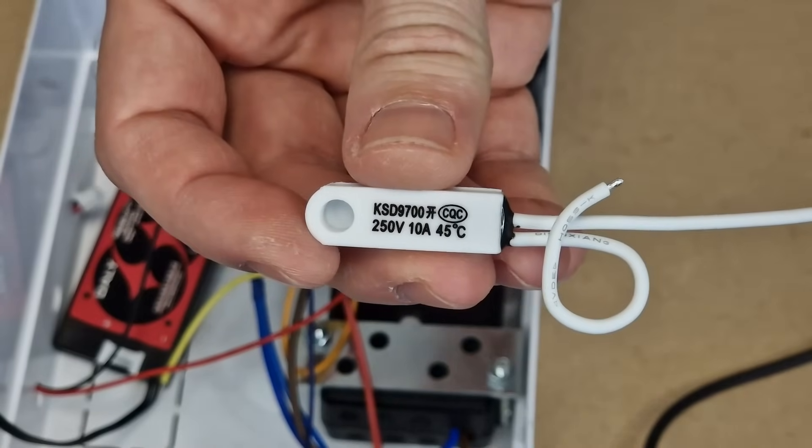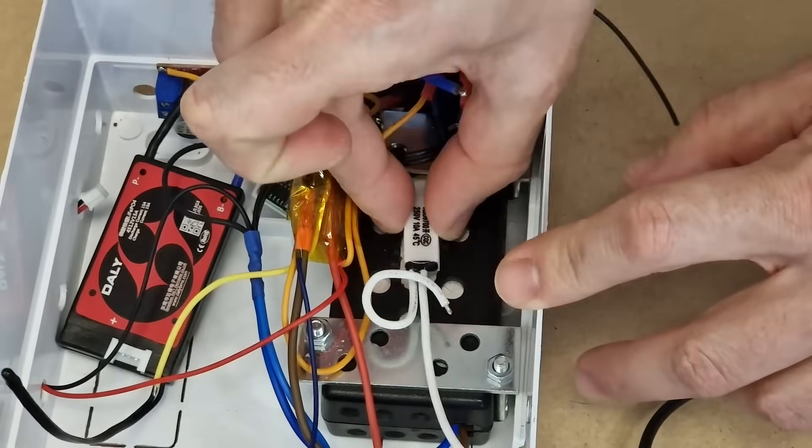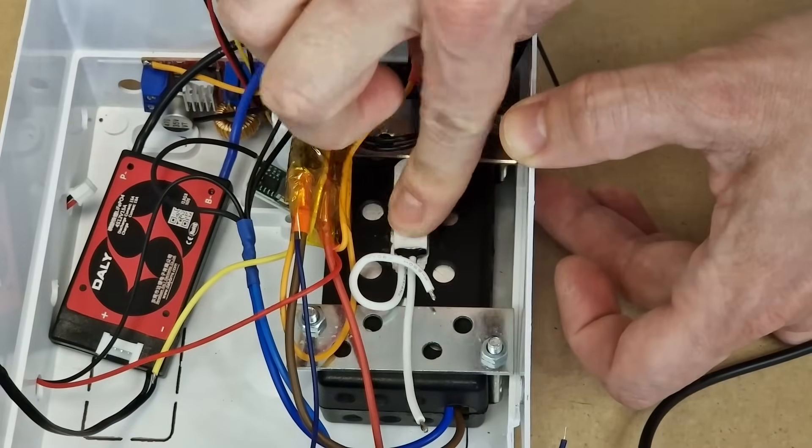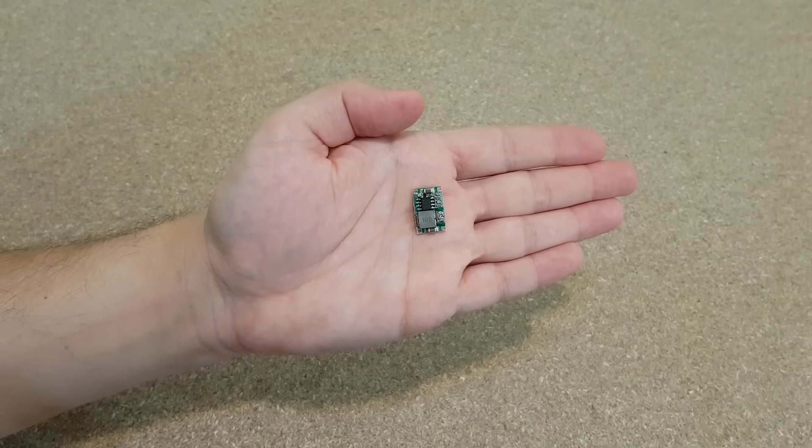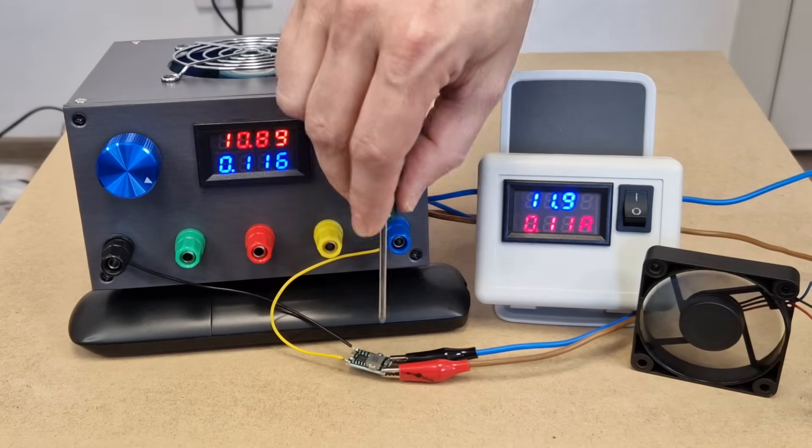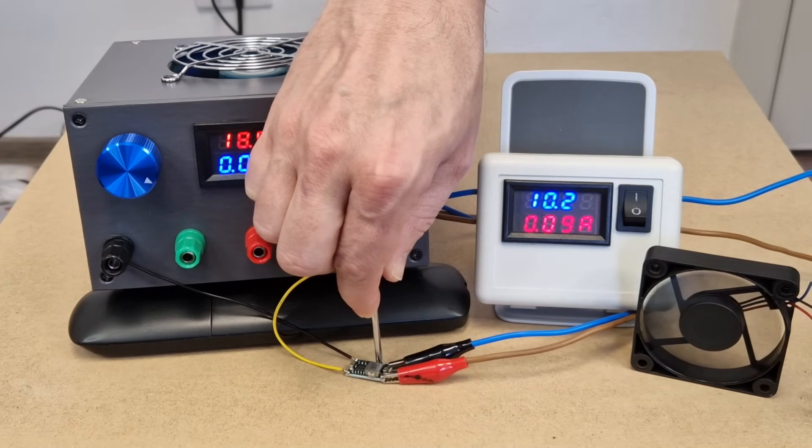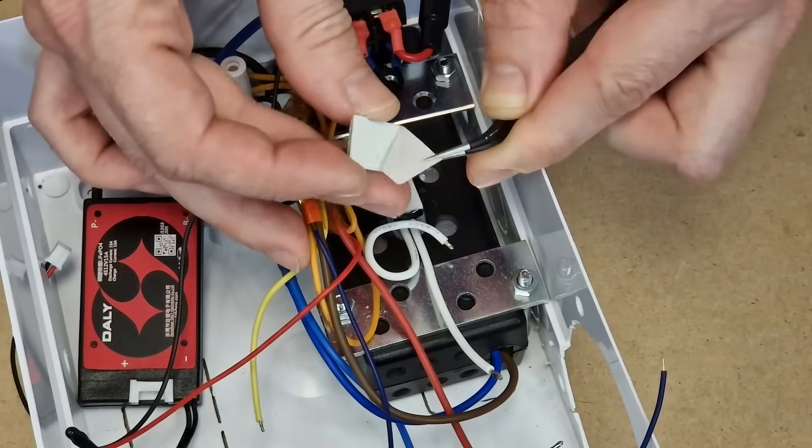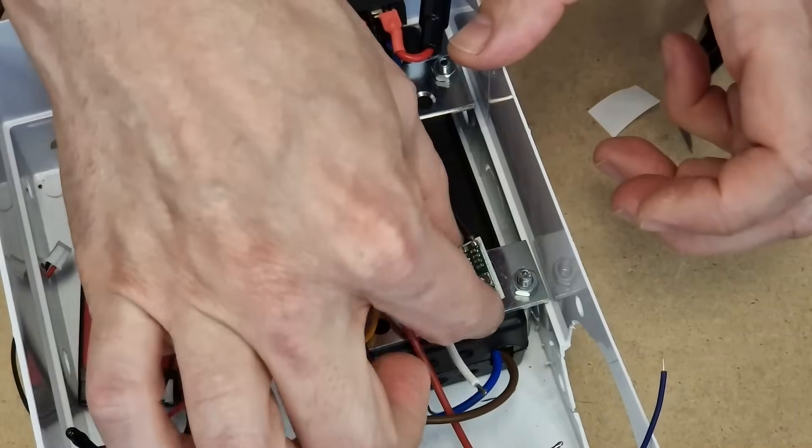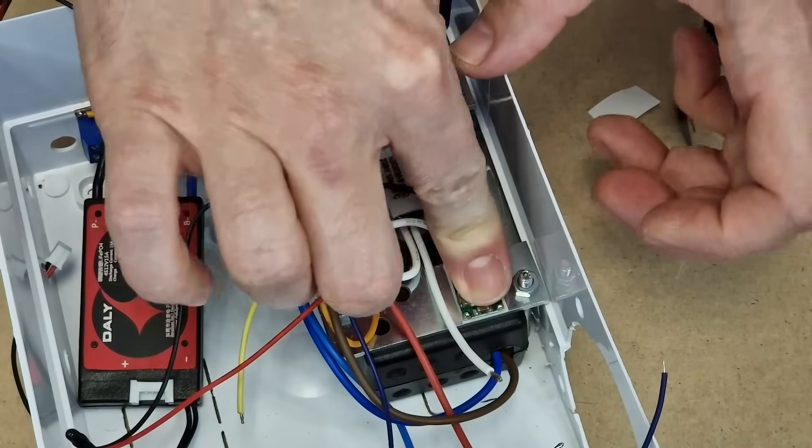The 45 degrees Celsius thermal switch will be mounted on the charger heatsink with thermal sticky tape. I will use this tiny buck converter to power the fan. Initially I set the fan voltage to 9 volts, but in the end I increased it to 10 volts. It will draw around 70 milliamps.